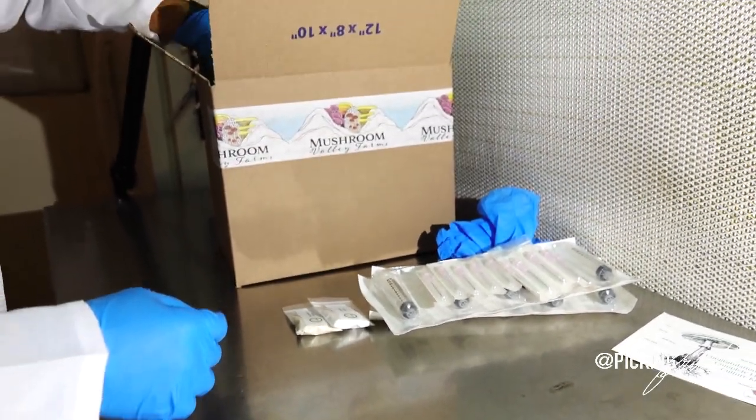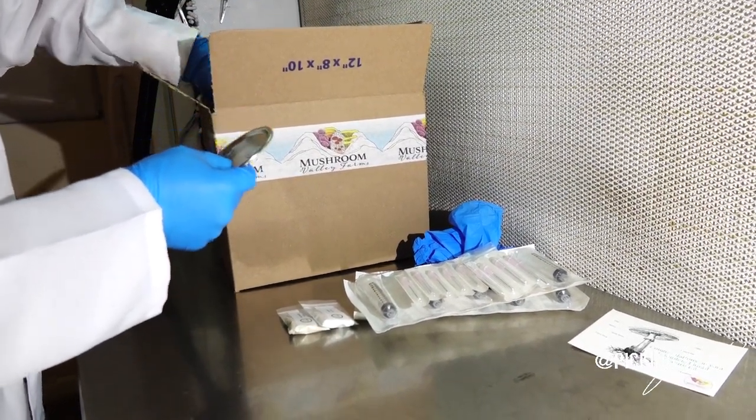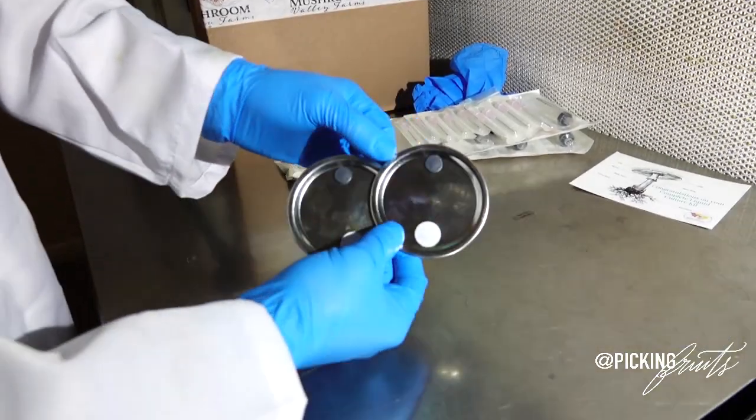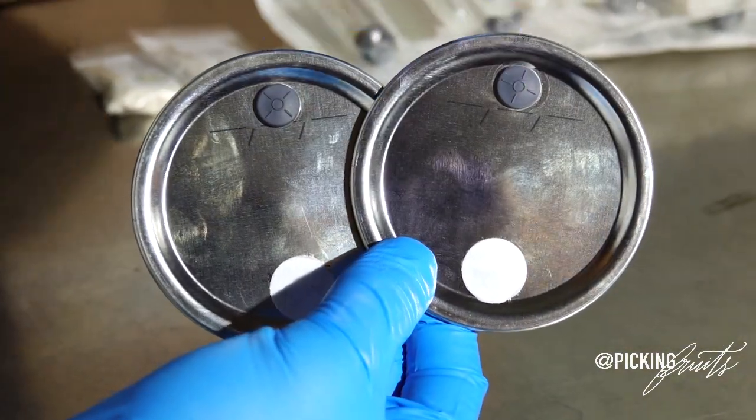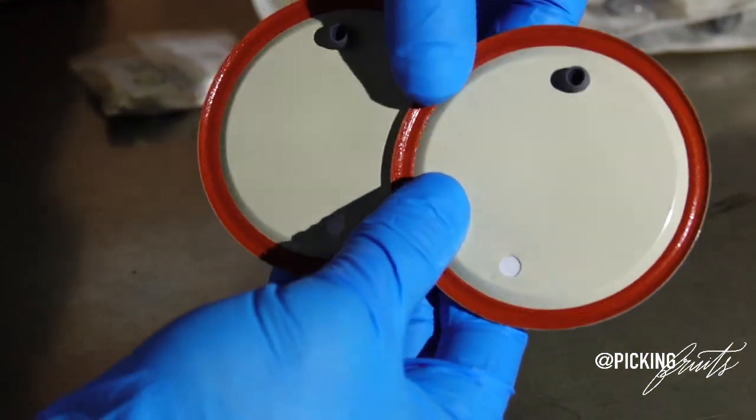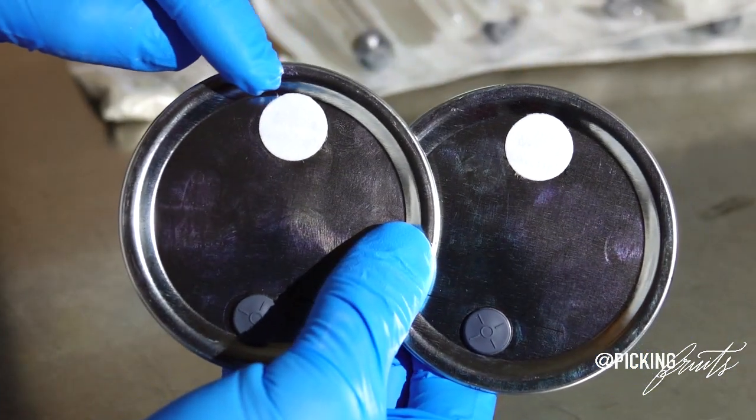The next thing you will find in your kit will be two modified 1 quart wide mouth lids. They've been modified with silicone injection ports and they've also been modified with gas exchange filters.